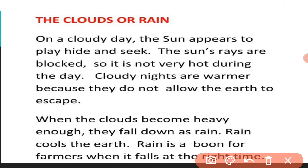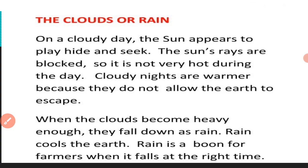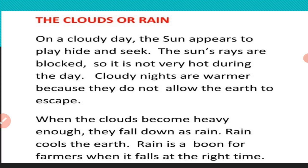When the clouds become heavy enough, they fall down as rain. Rain cools down the earth, making our weather cooler. Rain is a boon for farmers when it falls at the right time, helping their crops grow healthily. So clouds and rain affect the weather in this way.